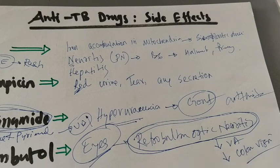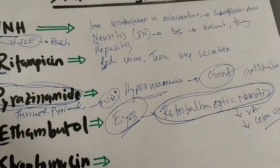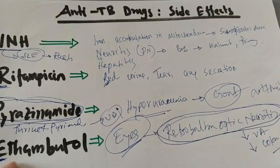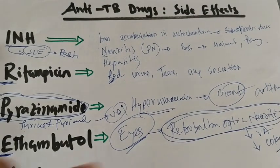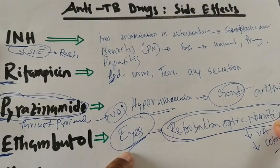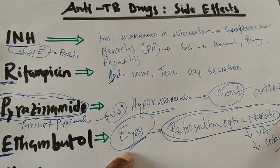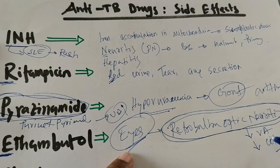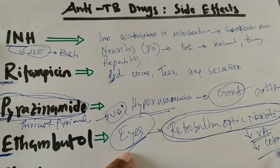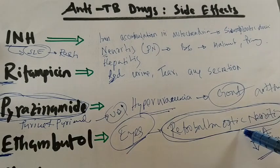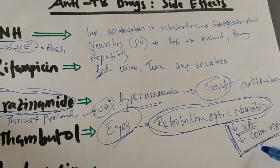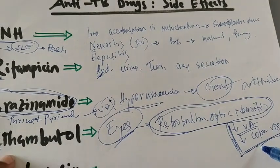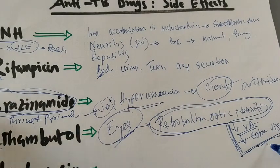So in short, E for eyes — patient develops Retrobulbar Optic Neuritis, clinically manifested by decreased visual acuity and decreased color vision. Importantly, this condition is reversible — with withdrawal or cessation of Ethambutol, the patient's visual acuity and color vision return to normal.